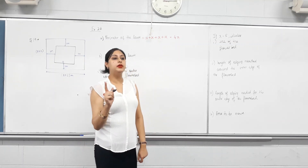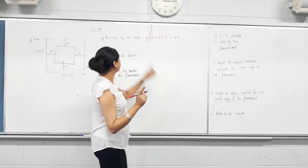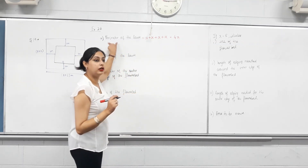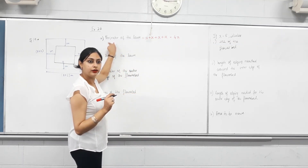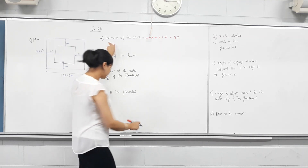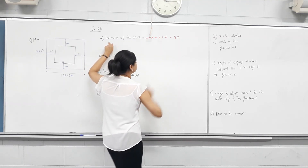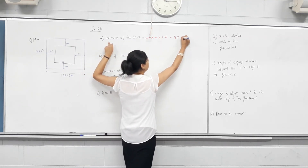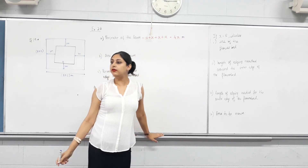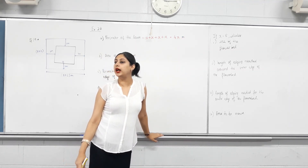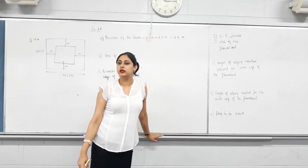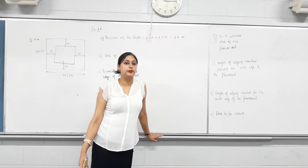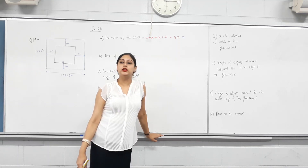Now, there's something missing here. It's a perimeter, so it must have metres. Must have units. So the units are metres. Every measurement should have units. Any questions so far?